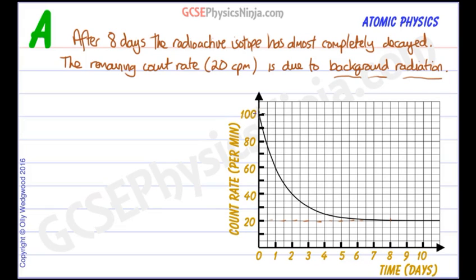We need to subtract 20 counts per minute from the original data. Starting at 100, that leaves 80. Then 60 leaves 40, and 40 leaves 20. At 30 we get 10, and after 8 days we're down to 0. If we plot a line through those corrected points, we get our adjusted decay curve.